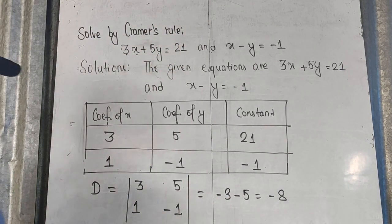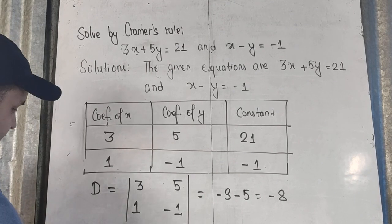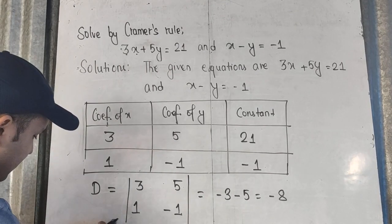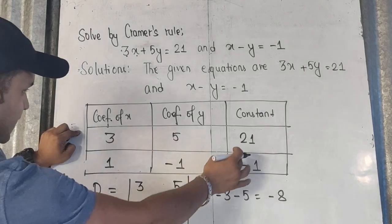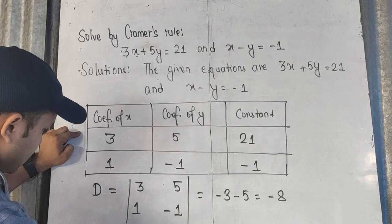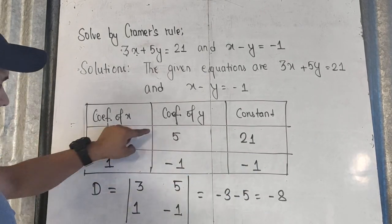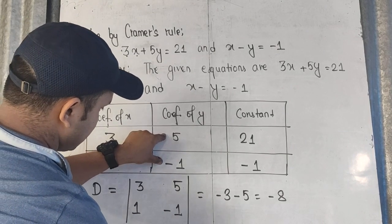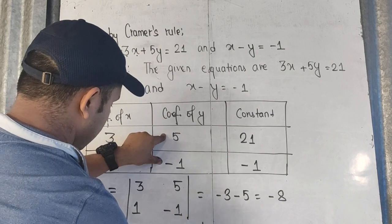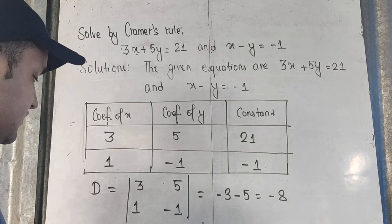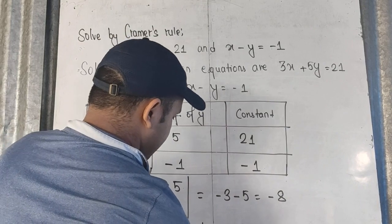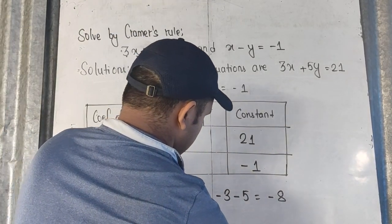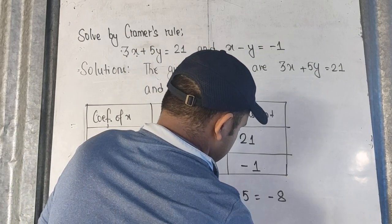Now after finding D, we find Dx. In some books it is written as D1 also. To find Dx, we place the constant terms in the first column and keep the coefficient of y. So the matrix is 21, 5, minus 1, minus 1. Now 21 into minus 1 is minus 21, minus 5 into minus 1 is minus 5. So minus 21 plus 5 gives Dx equals minus 16.